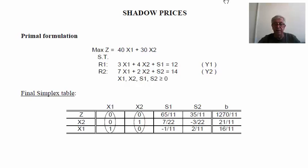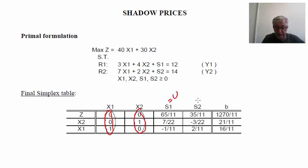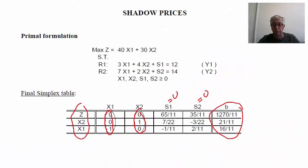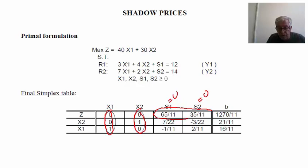We are going to start by illustrating the concept of shadow prices and we are going to use the problem of the tapestry company, which we present here again. We also have here the final table — the optimal table of the simplex. We have the final basic variables x1 and x2 and the non-basic variables s1 and s2. We are also going to analyze the optimality of the solution, looking at the coefficients in the line of z.